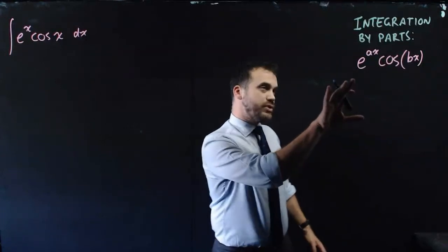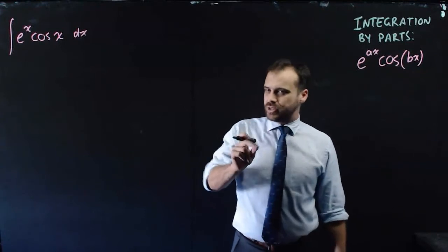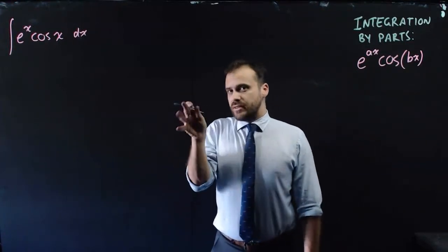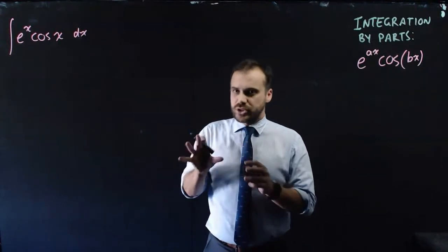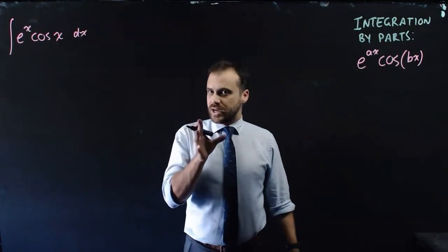So we're doing integration by parts. This time, this funky thing, e to the ax cos bx, a very particular kind of integration by parts, and it leads to a loop. And then in that loop, you find that you can insert the original equation to solve it. It's pretty clever. All right, so let's get started on this.